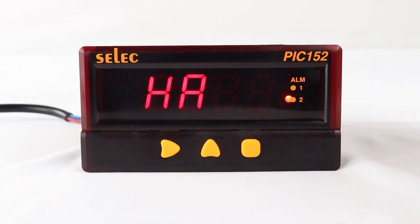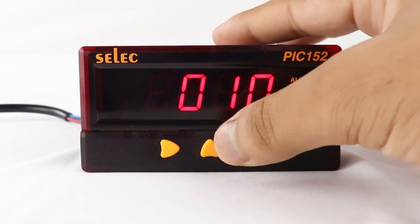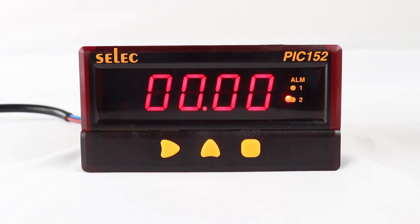Press square key to set alarm high limit. Then, select alarm hysteresis. Use square key to select delay.